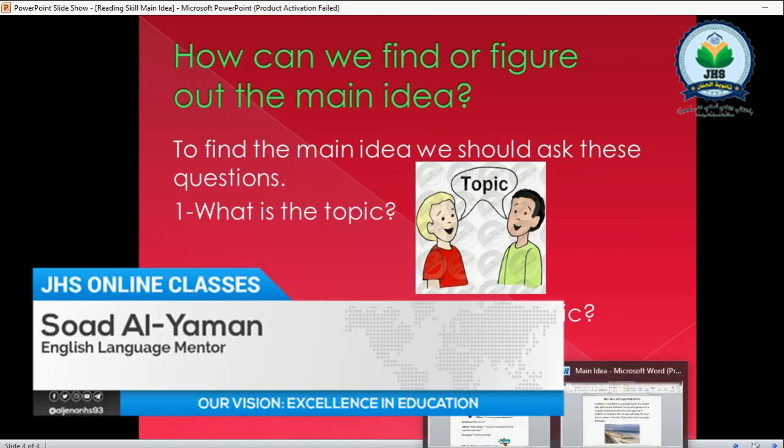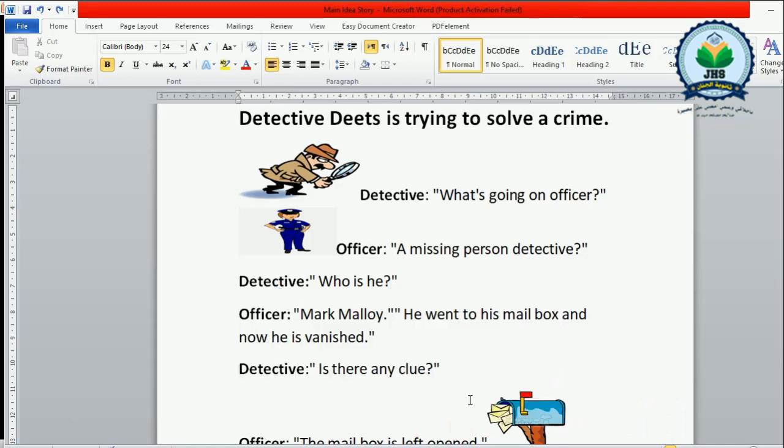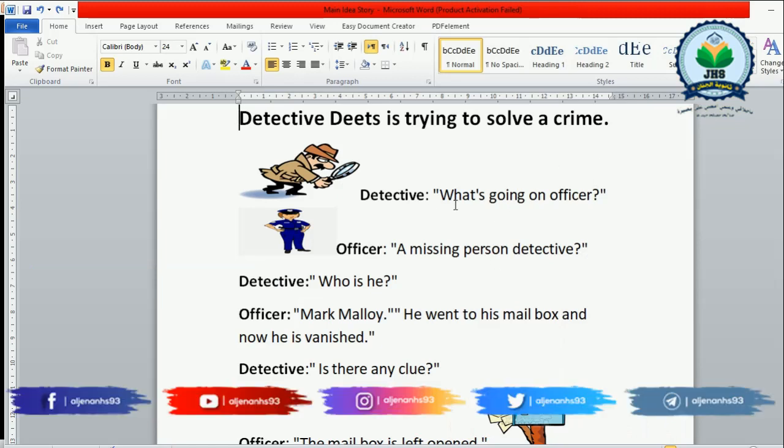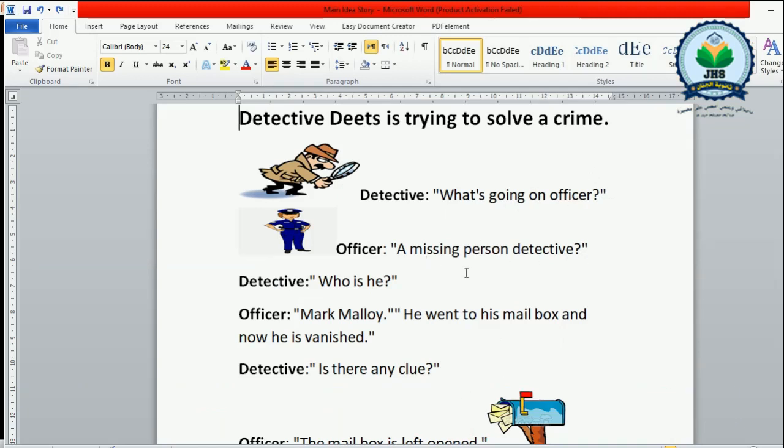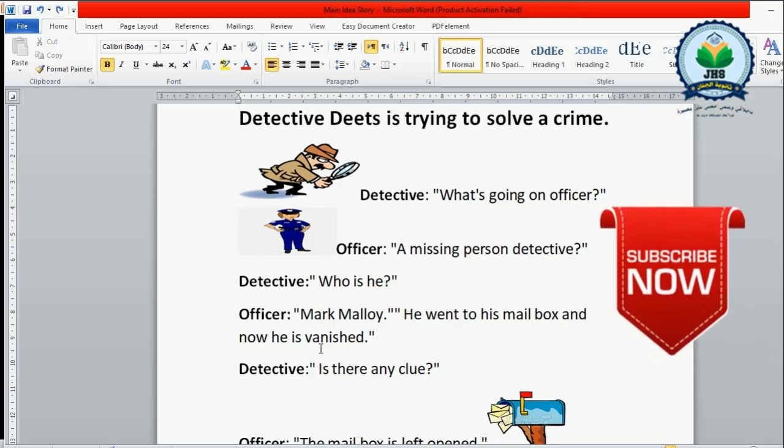I prepared for you a story that will help you to find the main idea. Detective Deetz is trying to solve a crime. What's going on officer? A missing person detective. Who is he? Mark Malloy. He went to his mailbox and now he is vanished.